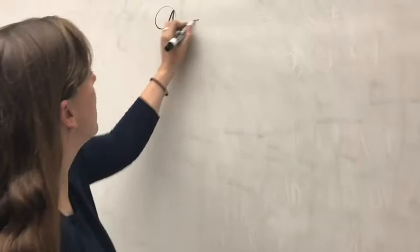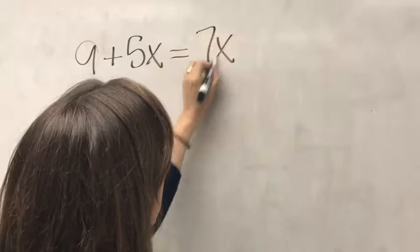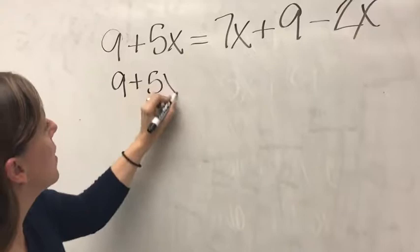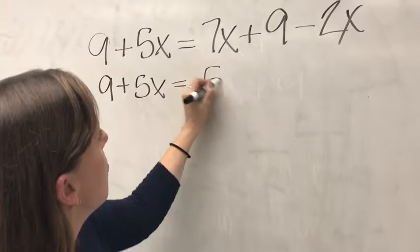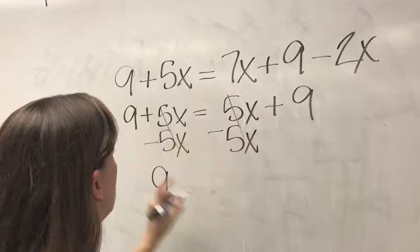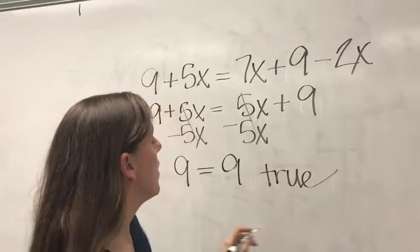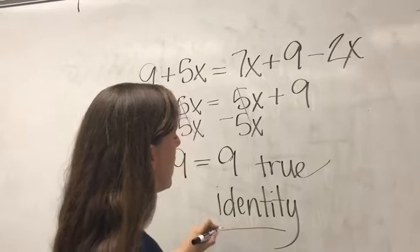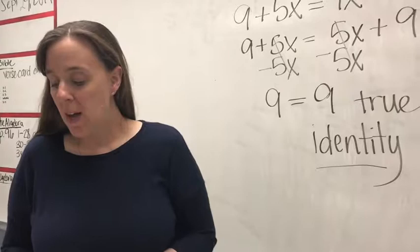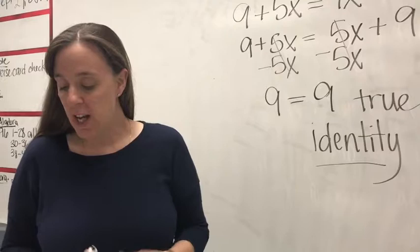Last example: 9 plus 5x equals 7x plus 9 minus 2x. Combine like terms on the right side: 5x plus 9. Now subtract 5x from both sides and we get 9 equals 9 — yes, that's always true, so this is an identity. Your assignment will include solving equations, a write-and-solve problem, determining whether equations are identities or have no solution, and solving equations while identifying which type they are. Be sure to read the instructions carefully on each section.